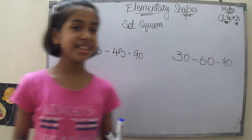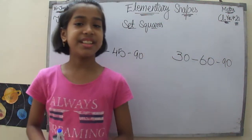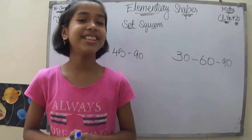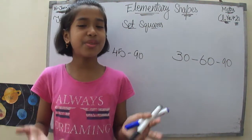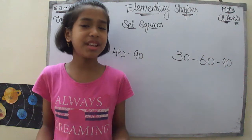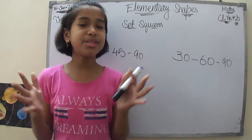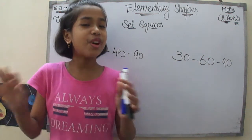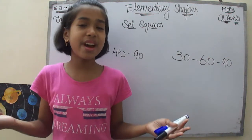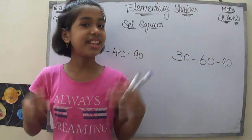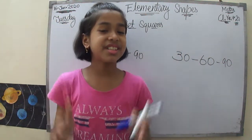Very simple names: 45-45-90 and 30-60-90. Now, you will ask why I have brought both these set squares into this video about quadrilaterals — what is the relation between the set squares and the quadrilateral? The set square is nothing but a triangle. Can you see three angles? So the set square is just a triangle.